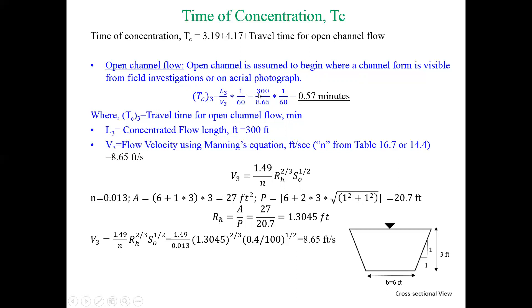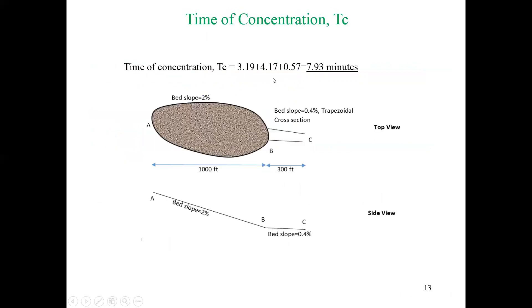That's what we are using here: 300 divided by 8.65, and the time is 0.57 minutes. Now we have time for sheet flow, shallow concentrated flow, and open channel flow. If we add these three together, the total time of concentration is 7.93 minutes, which simply means water from the furthest point will take 7.93 minutes to come into the outlet at C. That is the end of class example 20. In our next video we will discuss peak runoff. Thank you.